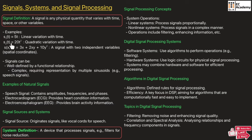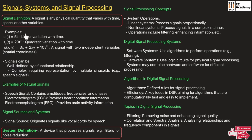Similarly, we have S2(t) = 20t², which is a quadratic equation varying with respect to time. S2 is a dependent variable depending on the independent variable t. We also have S(x, y) = 3x + 2xy + 10y², which represents a signal with two independent variables known as spatial coordinates x and y. These are examples of signals.